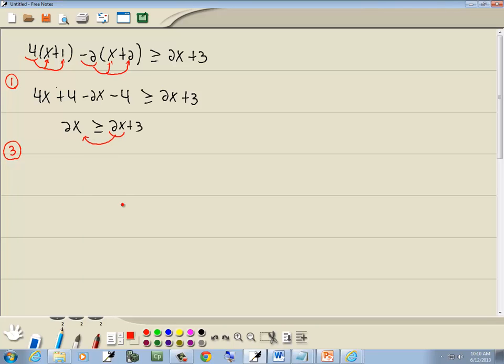I'll take the 2x over to the left side. Remember when you take anything across your inequality, the sign changes. So the positive 2x becomes a negative 2x. Greater than or equal to 3.